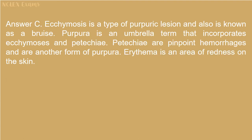Answer C. Ecchymosis is a type of purpuric lesion and is also known as a bruise. Purpura is an umbrella term that incorporates ecchymosis and petechiae. Petechiae are pinpoint hemorrhages and are another form of purpura. Erythema is an area of redness on the skin.